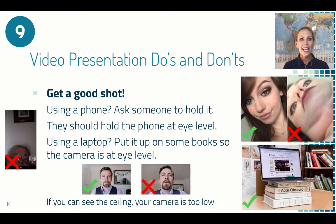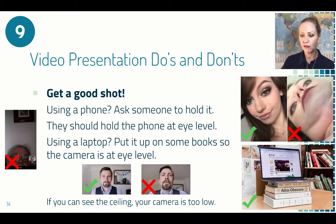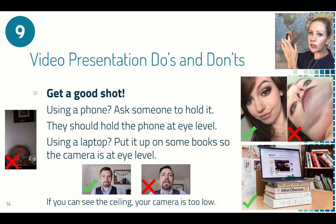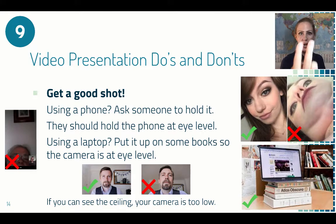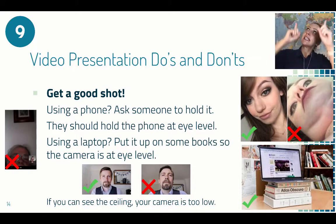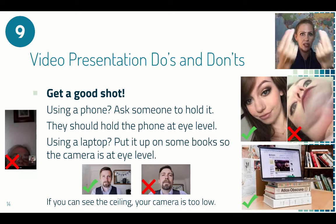Tip number nine is to get a good shot. You're using a phone or a laptop. If you're using a phone, ask someone to hold it for you — that will make your life a little bit easier. And if they're holding it, make sure they're holding it at eye level, not down low, not up high. Straight at eye level gives you the best video. This is the same on a laptop — your eye level and the camera should be the same. If it's too low, we're looking up your nose. If it's looking down, it makes you look like a small child. Make sure your camera is at eye level.